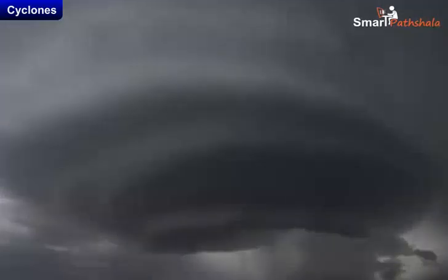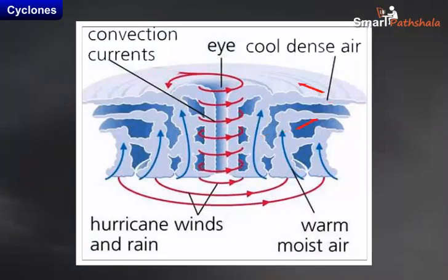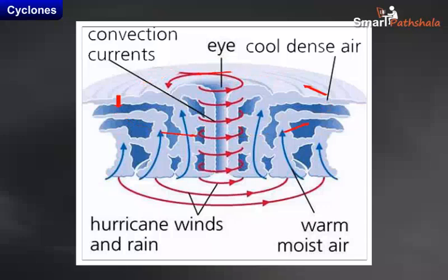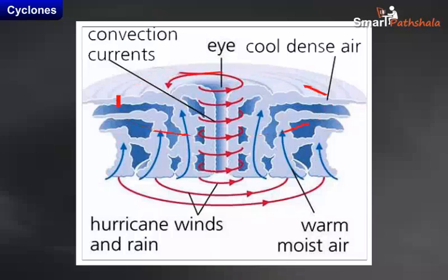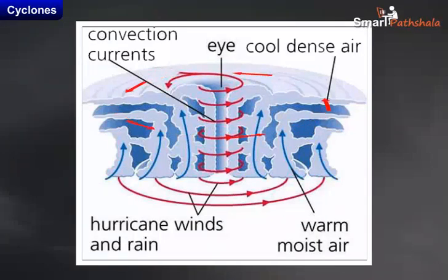Now let us know about the structure of the cyclone. The center of a cyclone is a calm area called the eye of the storm. A large cyclone is a violently rotating mass of air in the atmosphere. The diameter of the eye varies from 10 to 30 kilometers. It is a region free of clouds and has light winds.